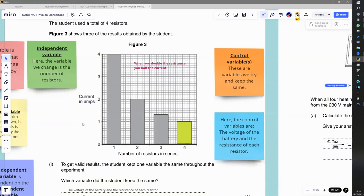So we know that I equals V over R. Because the voltage is going to be kept the same, we're keeping the battery the same, then we would be able to say that I is inversely proportional to R.